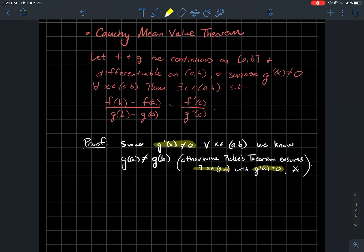But wait a minute, that contradicts the derivative's non-zero. So Rolle's theorem guarantees, in this case, since the derivative is non-zero, then the endpoints, the value at the endpoints can't be zero.